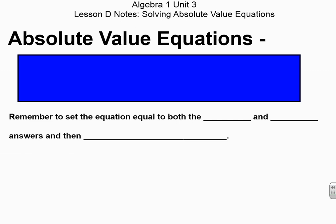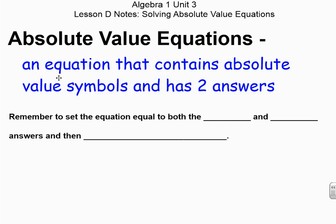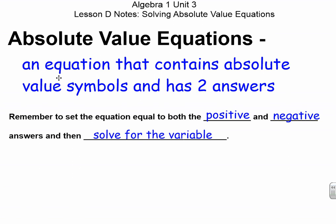This is Unit 3, Lesson D Notes: Solving Absolute Value Equations. An absolute value equation is an equation that contains absolute value symbols and has two answers. Remember to set the equation equal to both the positive and the negative answers, then solve for the variable. Every single one of these questions, you should have two answers.